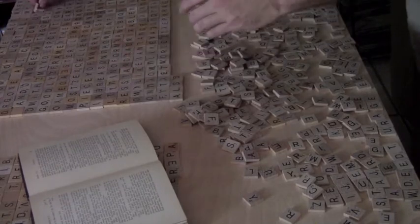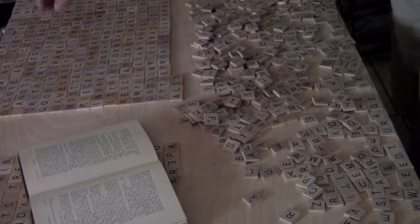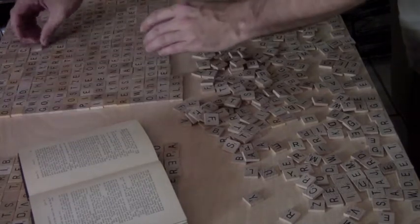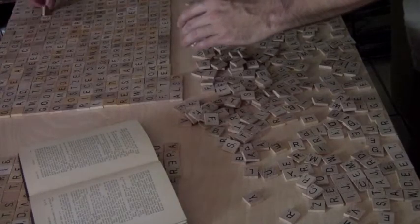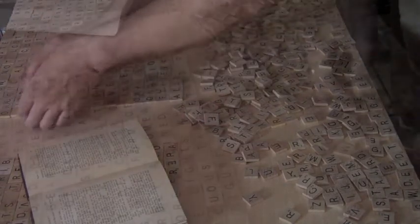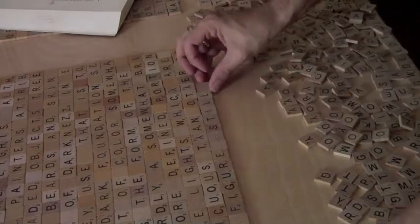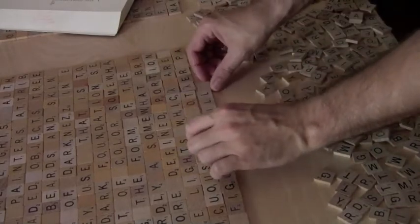Some of his writings about painting and how to go about painting. Here you can see me flipping over some of the tiles. I'm actually creating the spaces because there's only so many blank spaces in the Scrabble pieces that will allow you to see in between the words.